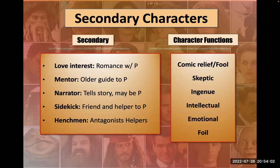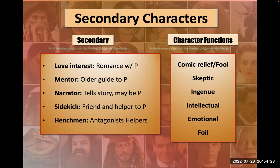Secondary characters come in many different types: love interests, mentors who guide the protagonist, a narrator character who tells the story, a sidekick or friend who is an ally and brings new skills, and henchmen who work for the antagonist or are smaller obstacles. Many of these characters have specific functions: comic relief to lighten the mood, the skeptic, the ingenue, the intellectual, or the emotional character — all challenging the protagonist or moving the story forward.